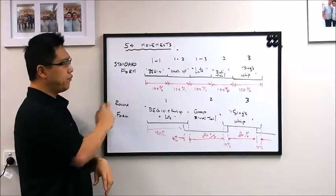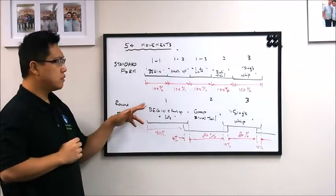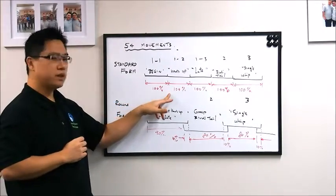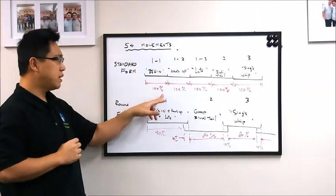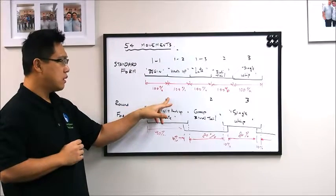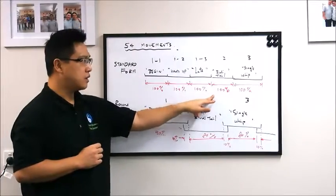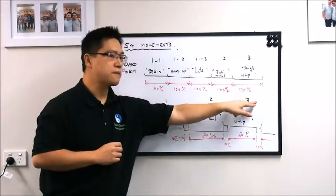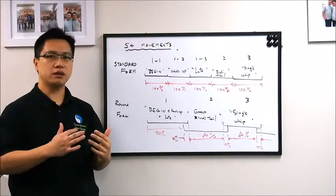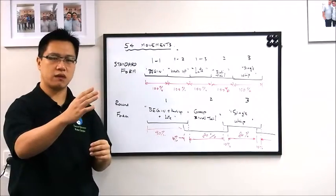And in standard form, we are doing it 100% as we complete the movement, and then we continue with the next, and the next, and the next, and the next. So we are doing it up to the limit of that move.